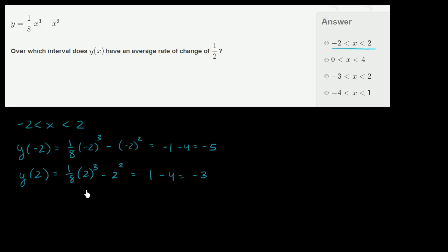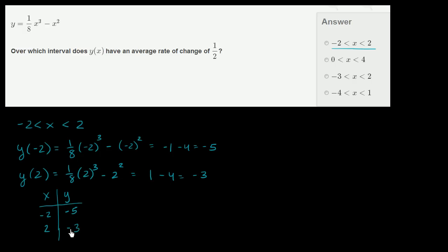So if you want to find your average rate of change, you want to figure out how much does the value of your function change and divide that by how much your x has changed. So we could make a table here: x and y. When x is negative 2, y is negative 5. When x is positive 2, y is negative 3. So your y increased by 2, and your x increased by 4.